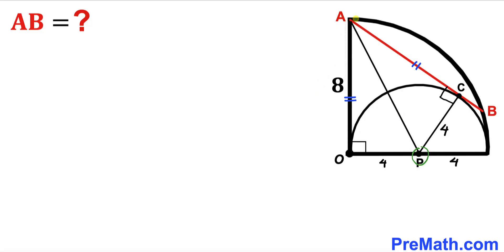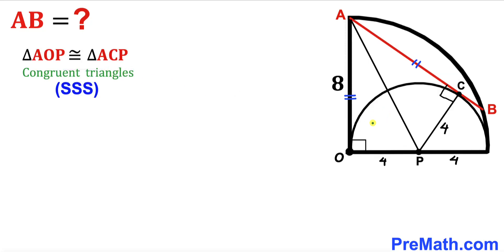I have connected center P with point A, giving us two triangles. We conclude that triangle AOP and triangle ACP are congruent by the side-side-side congruency theorem. Since these triangles are congruent, their corresponding angles are equal — if one angle is theta, the other must be theta as well.